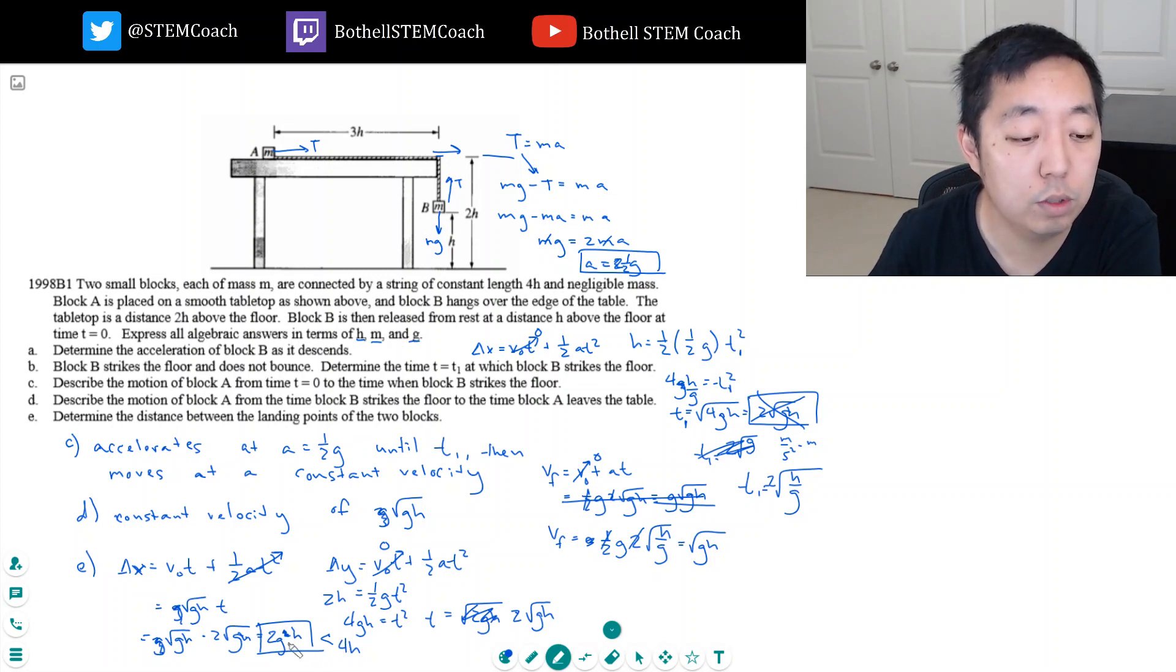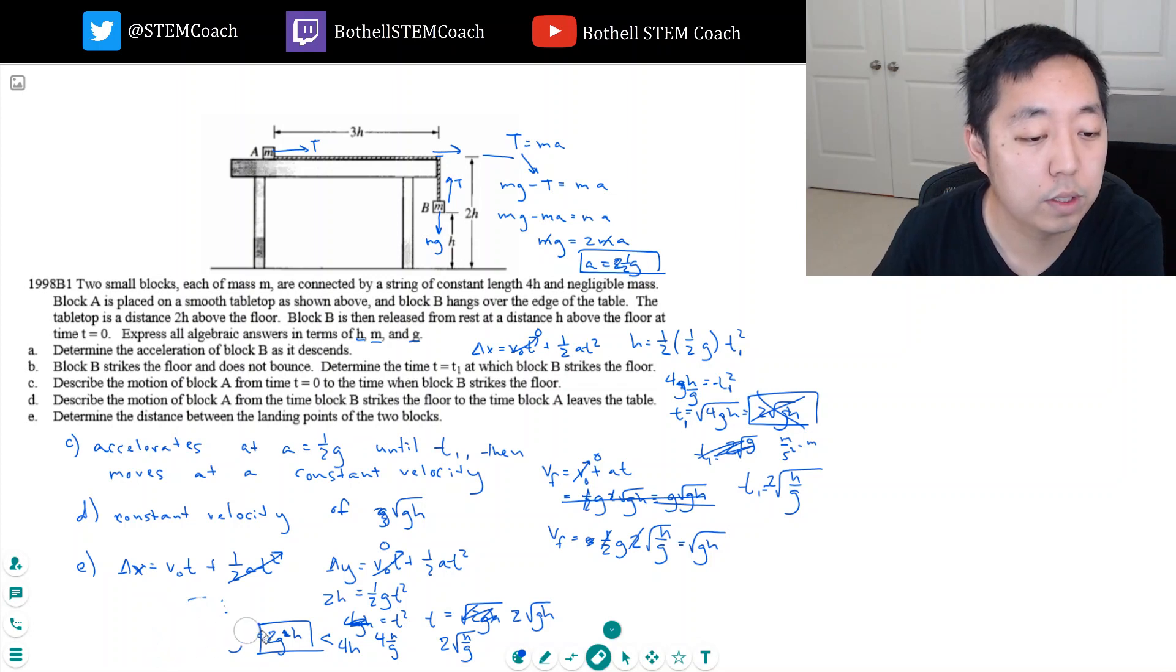The problem is, is this 2H bigger? Let me see. Oh, it's not 4GH. Again, I made the same mistake. It's 4H over G equals T squared, so T equals 2 root H over G. Sorry about the mess here. So let's erase all this and just redo it.